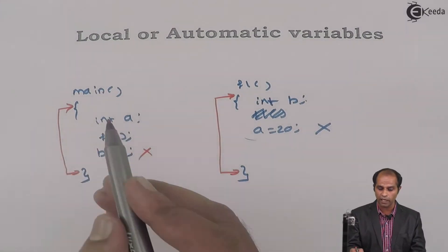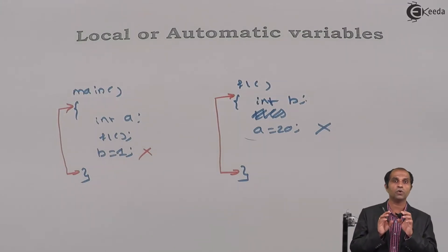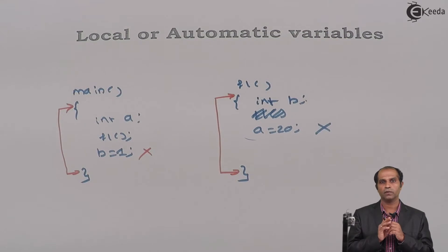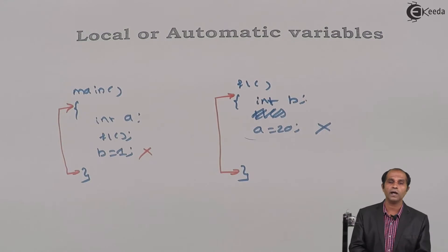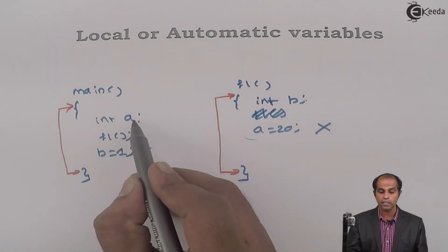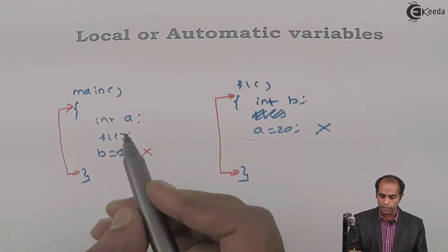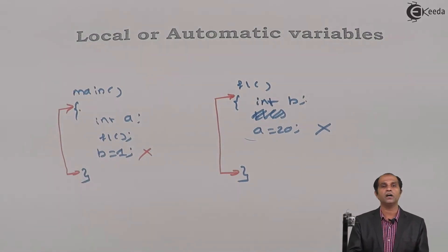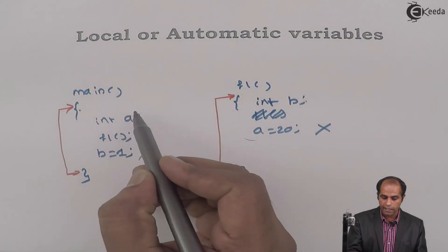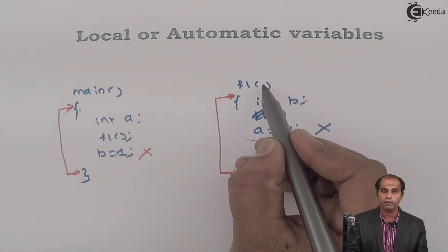When a is declared in main, a becomes specific to main. When b is declared in f1, b becomes specific to f1. A variable that can be used only within a specific function is called a local variable. This is also called an automatic variable because the variable is created automatically at the beginning of the function and destroyed automatically at the end of the function.